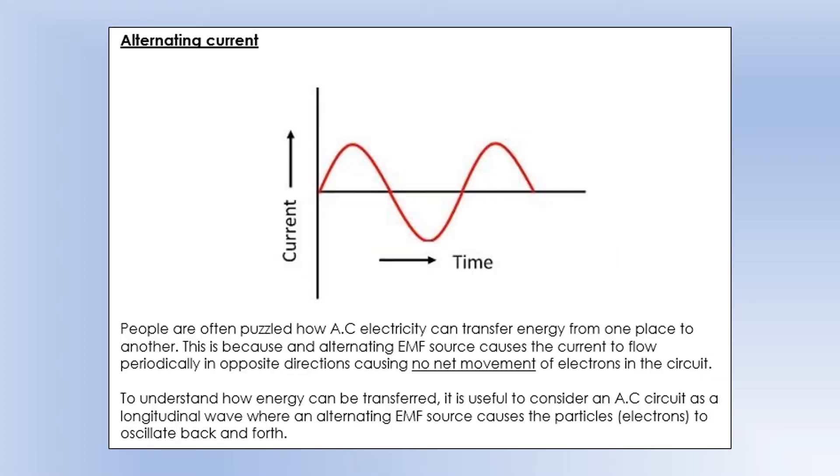And then, final one, looking at a different type of circuit. So in an alternating circuit, the current is continuously changing direction, and it follows a sine wave type shape, like you can see there. What puzzles people with alternating current is they don't understand how it can move energy from one place to another.